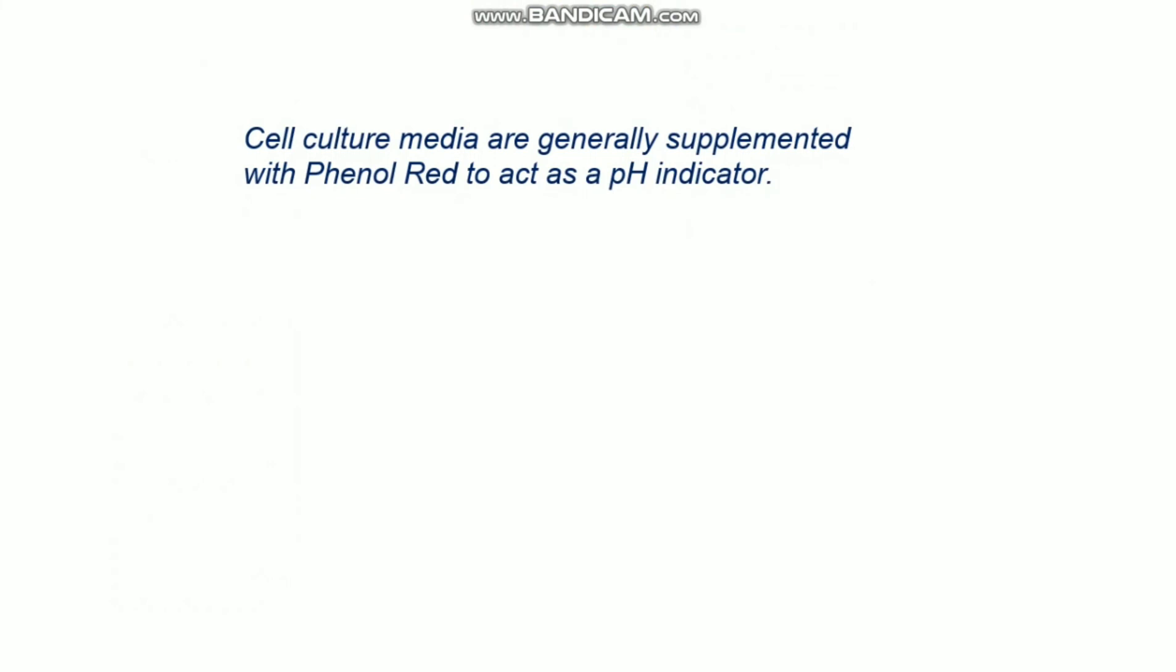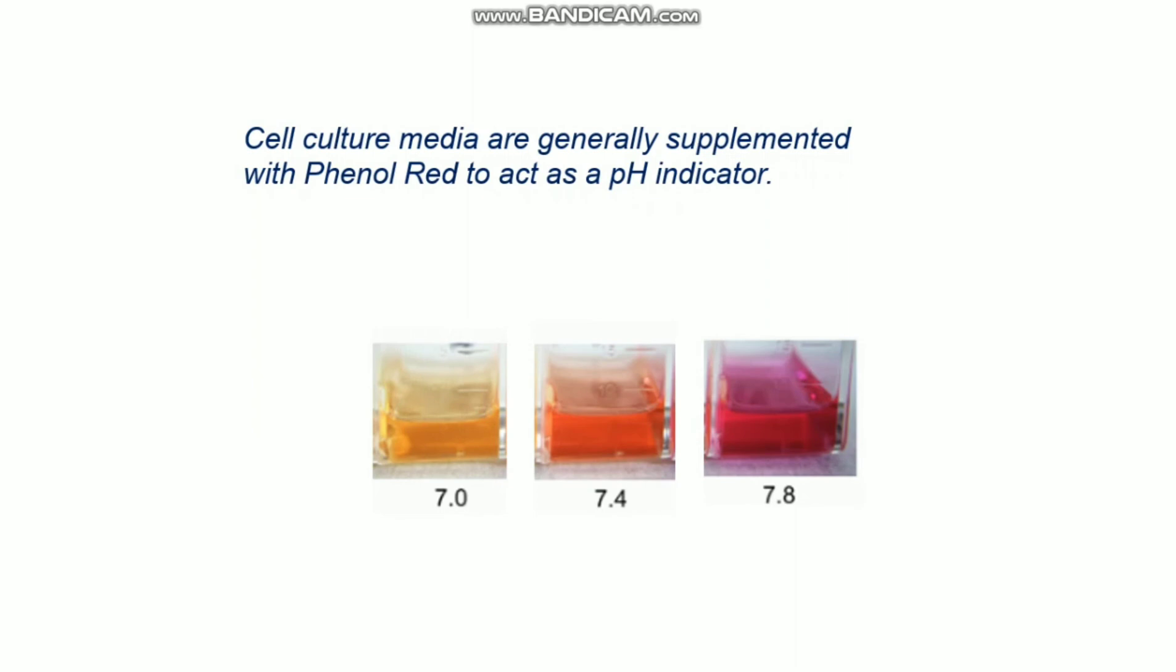Cell culture media are generally supplemented with Phenol Red to act as a pH indicator. The cell culture medium has different colors. This color is because of this Phenol Red that acts as a pH indicator. If your media color is like this, then it indicates 7.4. If it changes a little acidic, then it turns to little yellow. If it is a little alkaline, then it turns to little pink color. If it is more acidic, then it turns to more yellow, around 6.5 pH. This is how you can visually check the rough pH by the color changing of the cell culture media.